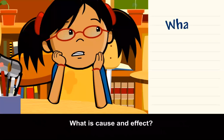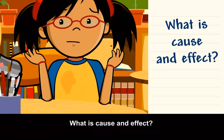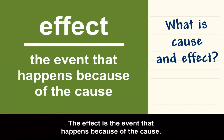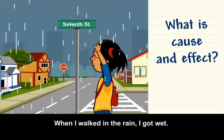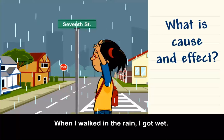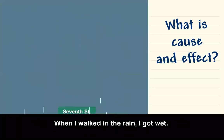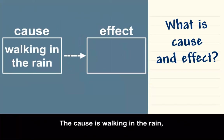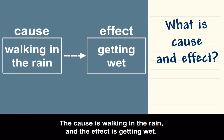What is cause and effect? A cause is why an event happens. The effect is the event that happens because of the cause. When I walked in the rain, I got wet. The cause is walking in the rain, and the effect is getting wet.